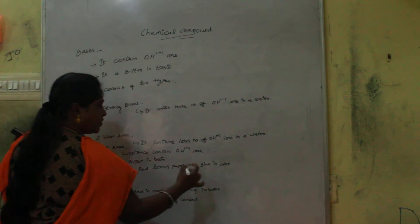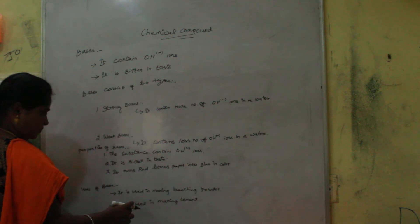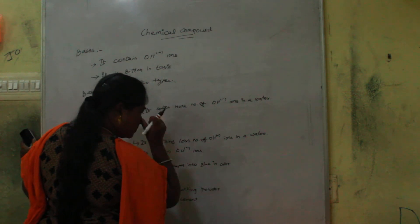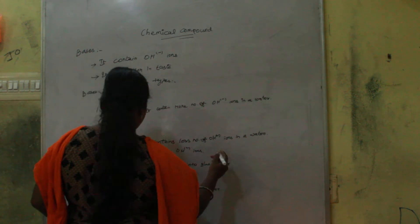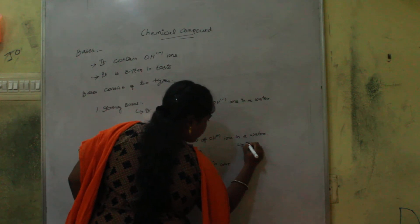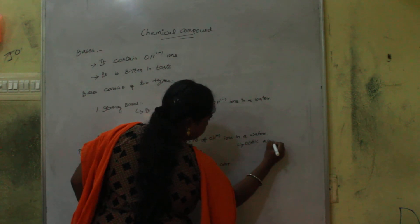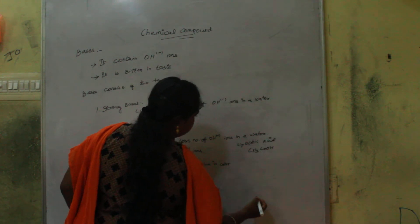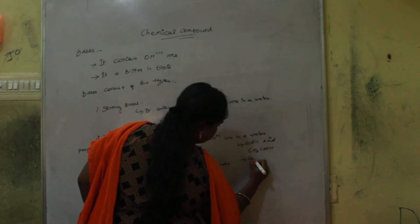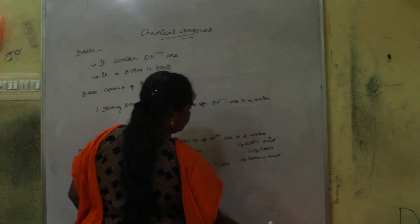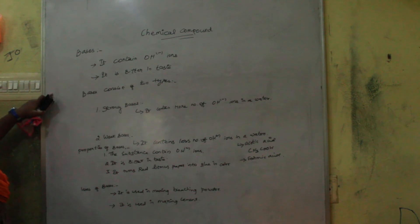An example for the weak acid is acetic acid, CH3COOH formula. Now looking at examples of bases, the types, properties, and uses of the bases.